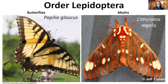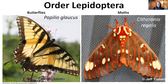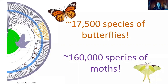Moths are in the order Lepidoptera, which includes their close relatives butterflies. Lepidoptera literally means scaled wings. There are a lot of rules people try to use to differentiate butterflies and moths, but a lepidopterist would likely say that butterflies are simply diurnal, or day-active, moths. When you ask someone to imagine a lepidoptera, the first thing that comes to mind are bright charismatic butterflies, when in fact butterflies are just a fraction of the diversity within Lepidoptera. Looking at this figure, we have about 160,000 species of moths and only 17,500 known species of butterflies.